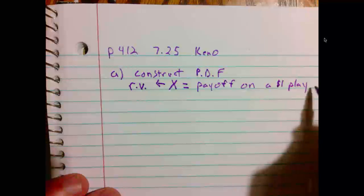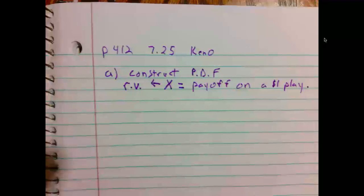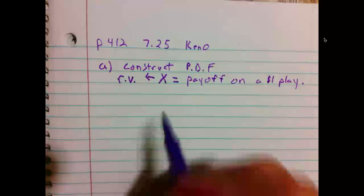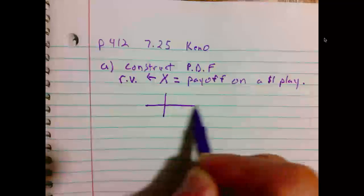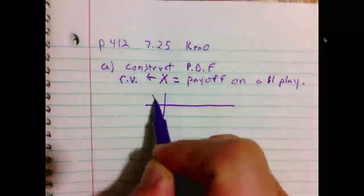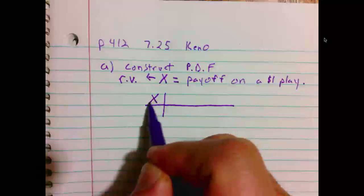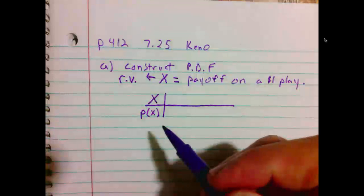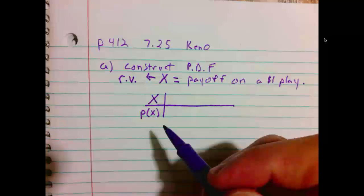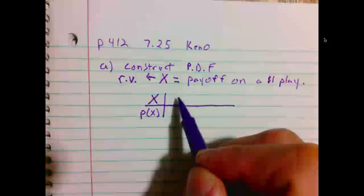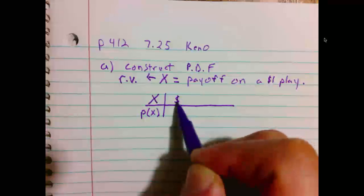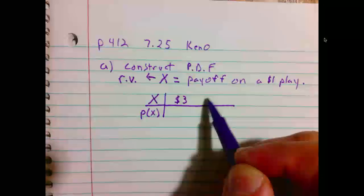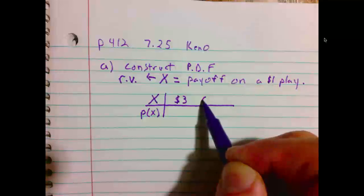We're going to give them $1 to play, and X, our random variable, is going to be the payoff on that. So, we make our table. X, probability of X. It says our payoff is $3. That is, if we win, we're going to collect $3. Well, that's one possible outcome. If we lose, we get $0.